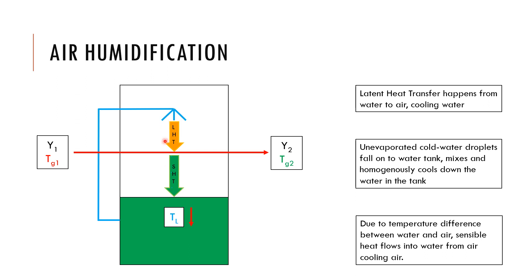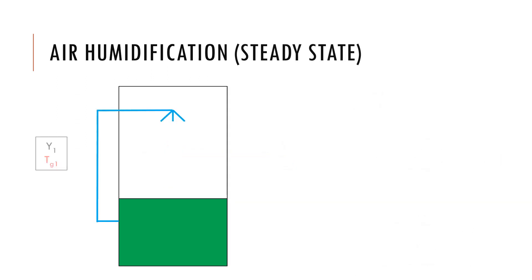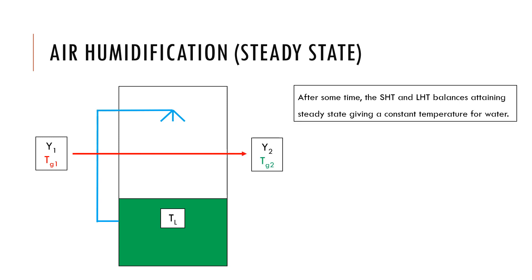At the point where the sensible heat transfer rate equals the latent heat transfer rate, the system comes to a thermal steady state. Our air stream gets cold because initially latent heat was coming into the air stream, but now the sensible heat transfers from air to the liquid stream — energy is lost from the air. After some time, the latent heat transfer and sensible heat transfer balance, attaining steady state at a constant temperature for the liquid.